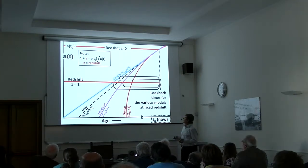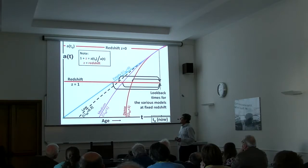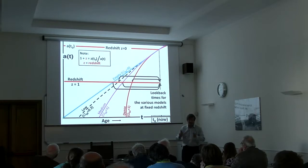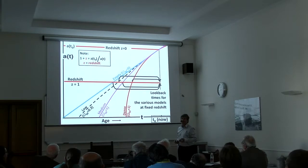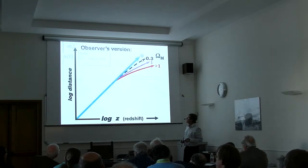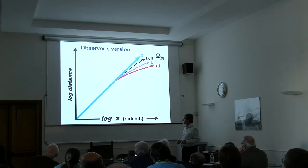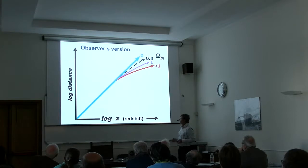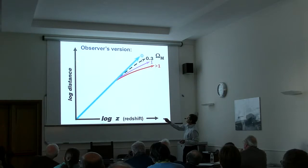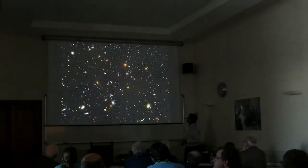The observer's job is to measure redshifts and, independently, distances — not using the redshift, that would not be fair — and plot the distance versus redshift relation. At low redshifts, everyone gets the linear Hubble law. But at higher redshifts, for a given redshift, the dense universe has the smallest distance and the empty universe has the biggest distance.